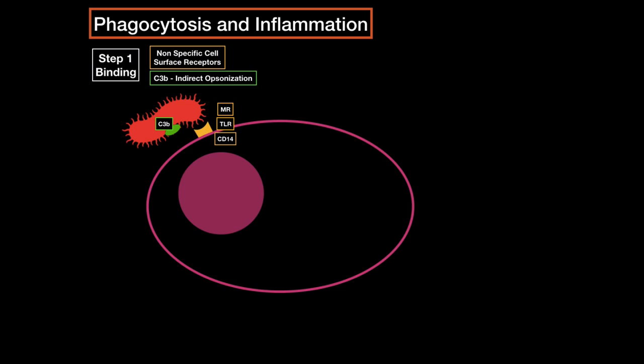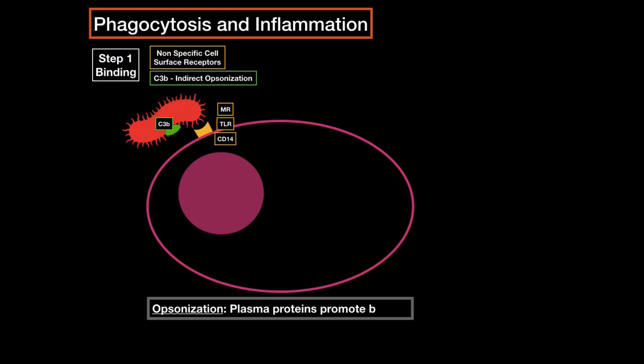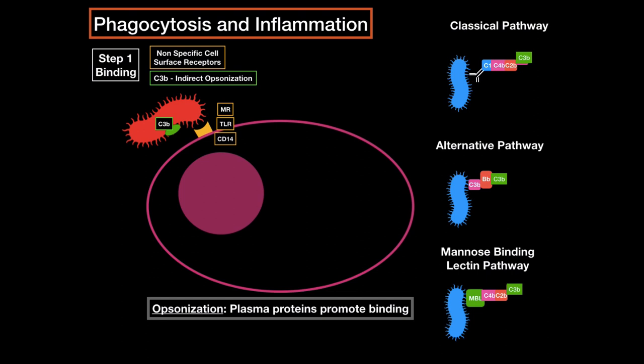The second way is by indirect opsonization with the help of the complement system. Opsonization means when a plasma protein promotes binding — when a complement protein helps the macrophage bind to the bacteria. It's called indirect opsonization because anything that doesn't include antibodies is indirect. The complement system has three main ways to opsonize bacteria: the classical pathway, which mainly includes the antibody; the alternative pathway, which includes factor B; and the mannose-binding lectin pathway. All of these help the macrophage phagocytose by opsonizing, because it expresses C3B receptor, which can bind to C3B.